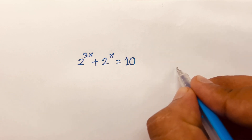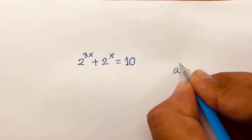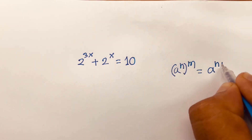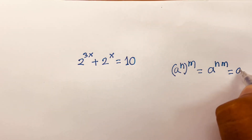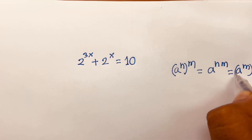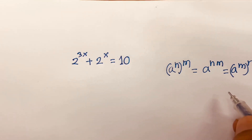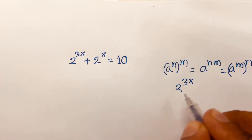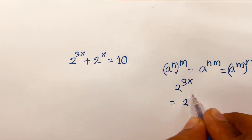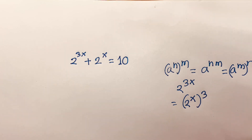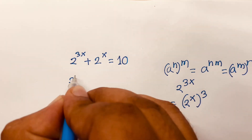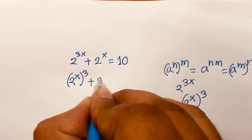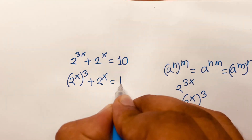First of all, we know the exponential rule: a to the power n, bracket to the power m, is equal to a to the power nm, which is equal to a to the power m bracket to the power n. If I follow these rules, I can say 2 to the power 3x will be 2 to the power x, bracket to the power 3. So the equation becomes: 2 to the power x, bracket cubed, plus 2 to the power x, is equal to 10.